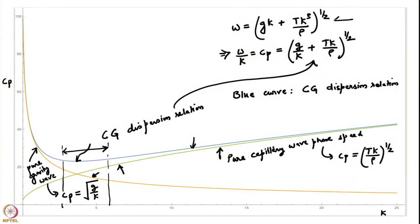We were looking at the dispersion relation for capillary gravity waves in deep water. We had found that the dispersion relation was given by omega = (gk + tk³/ρ)^(1/2). We had plotted the phase speed as a function of k and found that there is a qualitative difference due to the inclusion of surface tension.